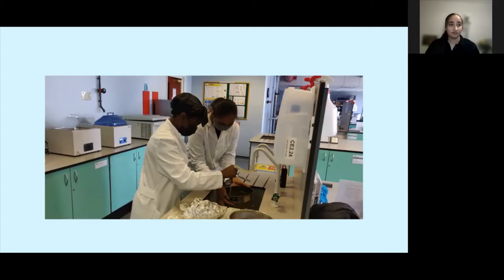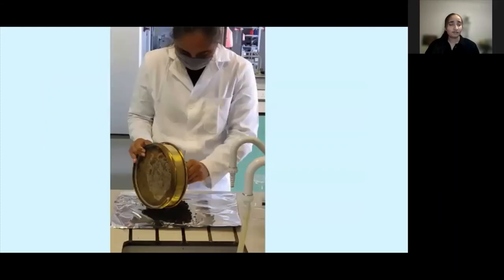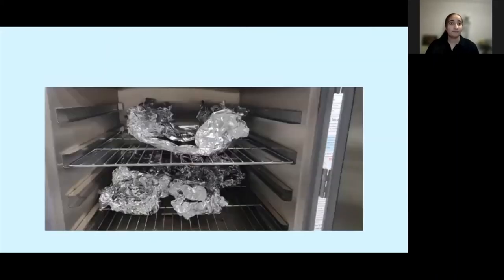Once we removed the dried water samples from the oven, we looked at them under the microscope. However, we found that it was difficult to determine a difference between plastics and organics. For example, the eggs that we sometimes found were difficult to distinguish from anything synthetic and so we needed to find a solution.